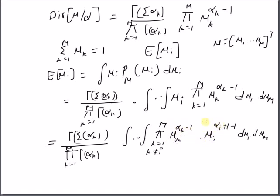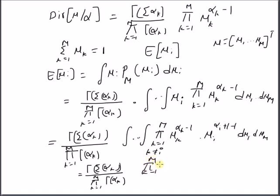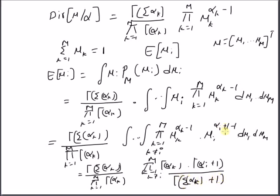The new Dirichlet distribution has a normalizing constant that replaces alpha_i in the summation and the product with alpha_i plus 1. So we have gamma of the summation of alpha_k's divided by the product of gamma of alpha_k, multiplied by the product k=1 to m of gamma of alpha_k where k is not equal to i, and gamma of alpha_i plus 1. The denominator is gamma of the summation of alpha_k plus 1, since we replaced alpha_i with alpha_i plus 1. This is the new normalizing coefficient.